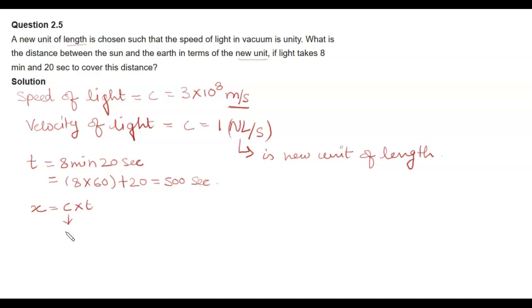Here c is 1 new unit of length per second, and t as we calculated above is 500 seconds. So in terms of these new units of length, distance between sun and earth is 1 into 500 equals 500 new unit of length.